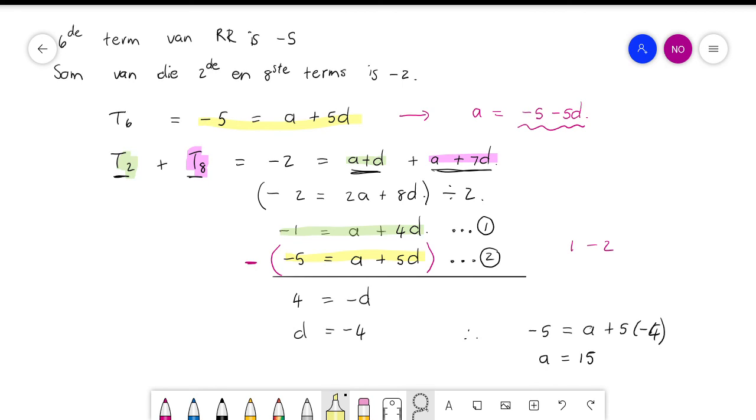But elimination works here, so you can use it. Then I used elimination and got d is minus 4, and then I substitute that back into either one of my equations to find a is 15.